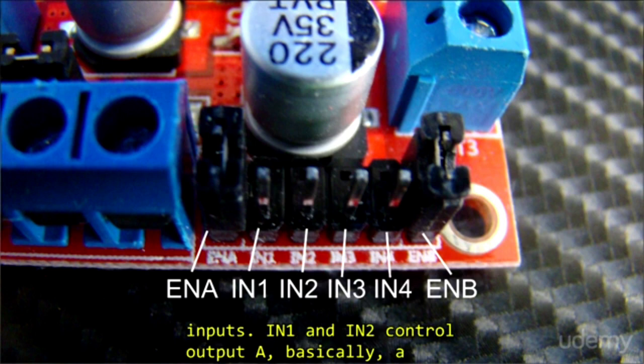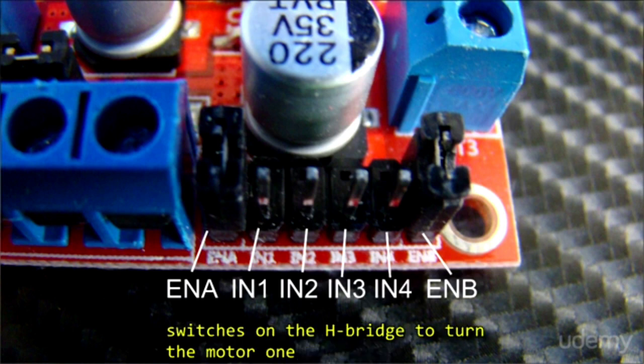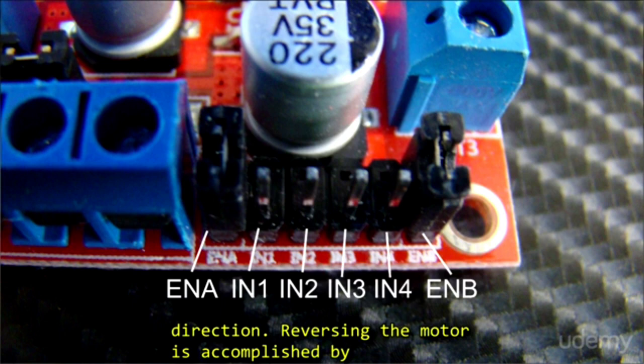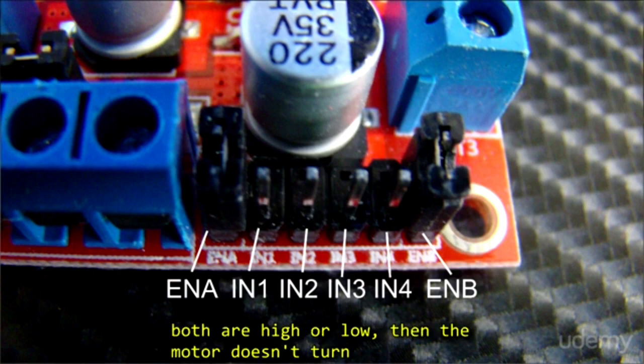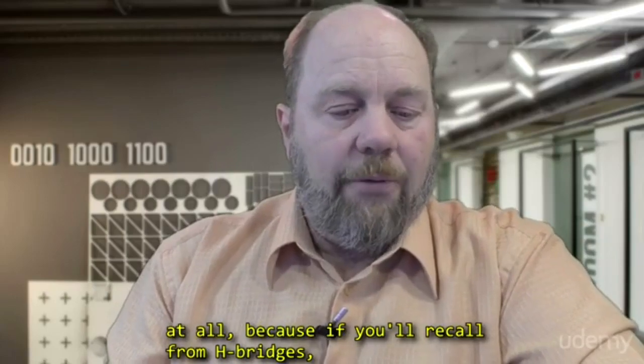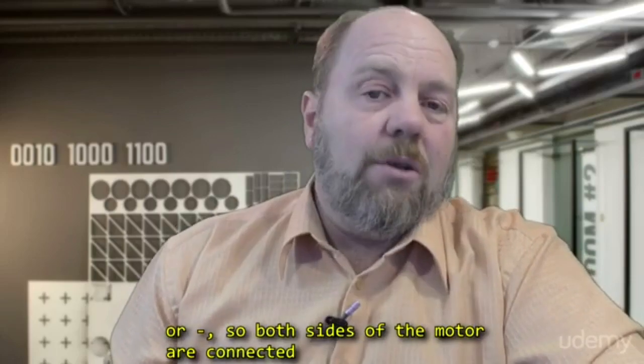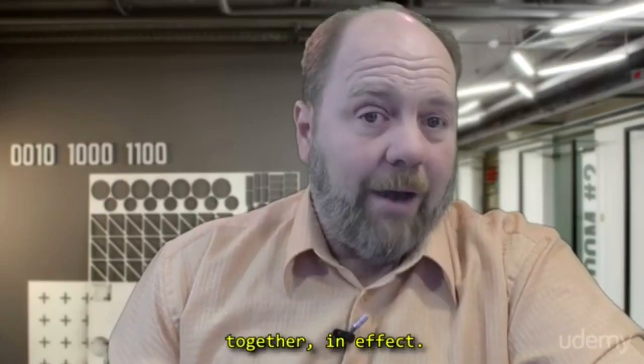IN1 and 2 control output A. Basically a high on IN1 and a low on IN2 will throw the digital switches in the H-Bridge to turn the motor one direction. Reversing the motor is accomplished by simply putting a low on IN1 and a high on IN2. If both are high or low, then the motor doesn't turn at all because, if you'll recall from H-Bridges, that connects both sides of the motor to either positive or negative. So both sides of the motor are connected together in effect.